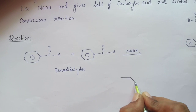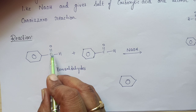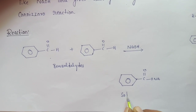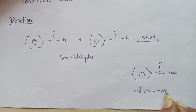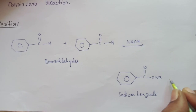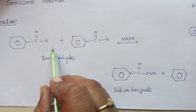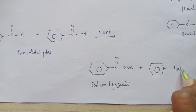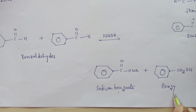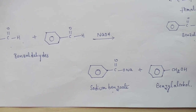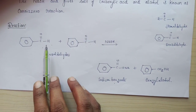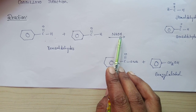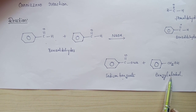Finally, it gives two molecules. The first benzaldehyde molecule undergoes oxidation — that is, addition of oxygen — and is converted into a salt of carboxylic acid, namely sodium benzoate. The other molecule undergoes reduction — that is, addition of hydroxide ions — and finally gives benzyl alcohol. So two molecules of benzaldehyde without alpha hydrogens react in the presence of a strong base like NaOH and give sodium benzoate as well as benzyl alcohol.